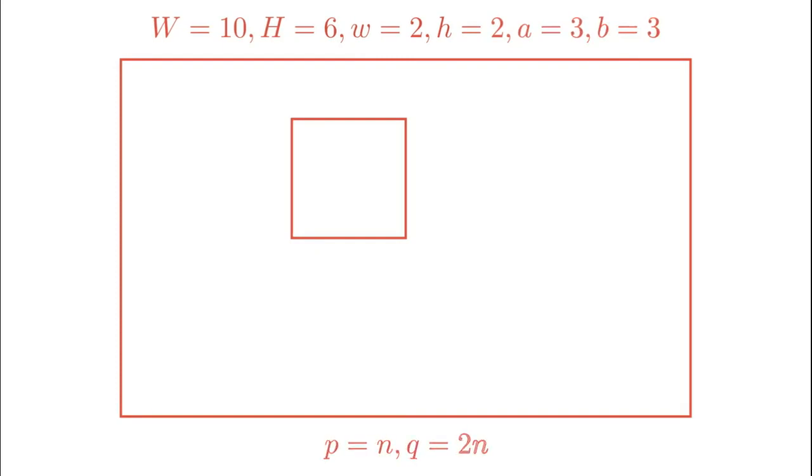Now let's see an example of this case. Here I have taken capital W to be 10, capital H to be 6, small w to be 2, small h to be 2, a to be 3 and b to be 3. If we solve this equation, we will see that for any natural number n, p equals n and q equals 2n satisfies this equation. So the logo will bounce around between the points a and b. There you go.